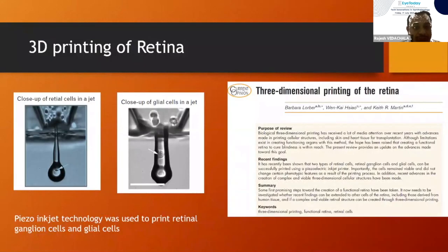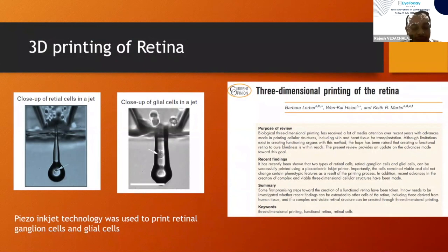Research has also started in 3D printing the retina. Retinal ganglion cells and glial cells have been printed with a hydro-ink technique and the cell survivability is good. In the future, we may also get a 3D printed retina.